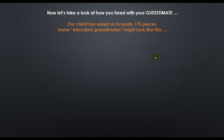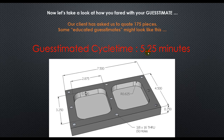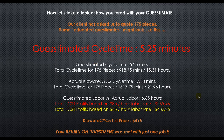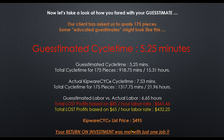Now let's look at some guesstimates and how they fare against the actual cycle time. Our client has asked us to quote 175 pieces. Let's say the estimate was 5.25 minutes. With that guesstimated cycle time of 5.25 minutes, for 175 pieces it would take 15.31 hours based on 100% labor. The actual CYC cycle time was 7.53 minutes, giving a total of 21.96 hours. The difference was 6.65 hours. At $85 an hour, you would have lost $565.46. At $65 an hour, you still would have lost $432.25. The list price of Kipware CYC is $4.95, so your return on investment was met with just one job.